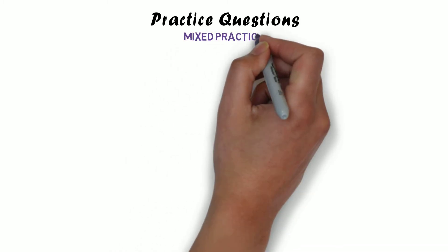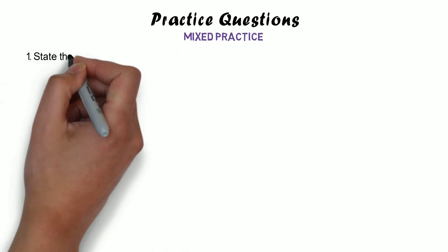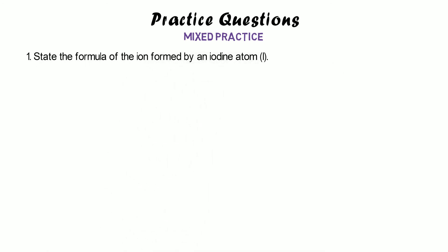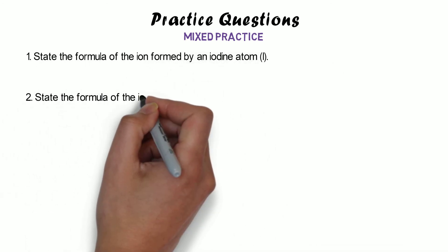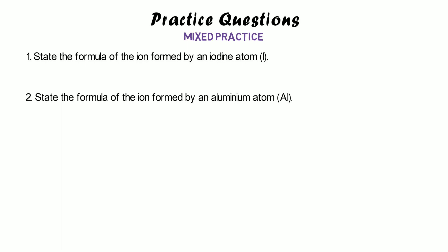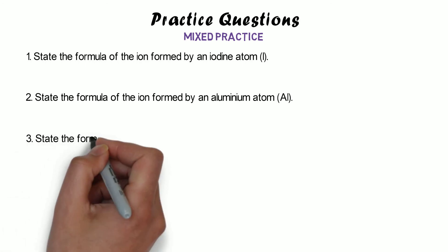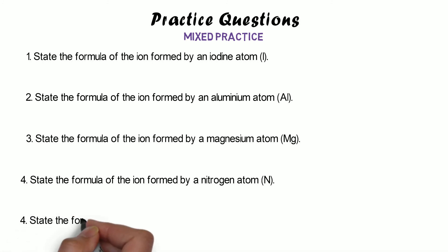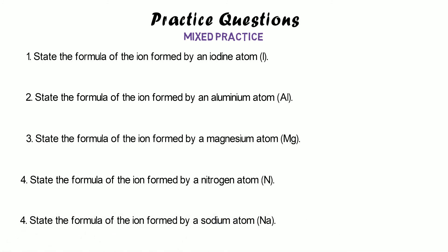Now let's put it all together with some mixed practice questions — some will form positive ions, some negative, and you'll have to use the periodic table to figure out what group they're in. Work out the formula of the ion formed by: iodine, aluminium, magnesium, nitrogen, and sodium. Pause the video and have a go.